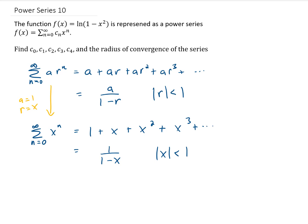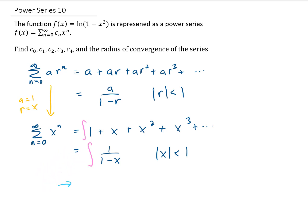Let's find one more of these power series by taking both sides of this equation — the infinite series on the left and the sum on the right — and integrating each side. If we integrate this series term by term we get a new series, and if we integrate 1 over 1 minus x, what we end up getting is the negative natural log of 1 minus x. The negative comes from a u-substitution when you do this integral.